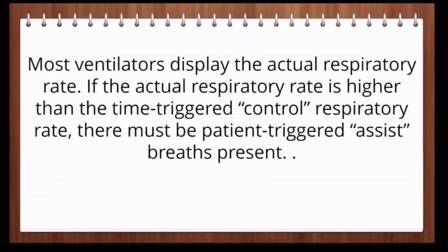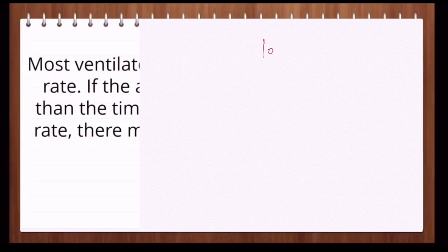Most ventilators will display the actual respiratory rate. For example, if you have set the respiratory rate to 10 but the actual rate displayed on the ventilator is 20, that means there are patient-triggered assist breaths present. If the actual respiratory rate is higher than the time-triggered control respiratory rate, there must be patient-triggered assist breaths.